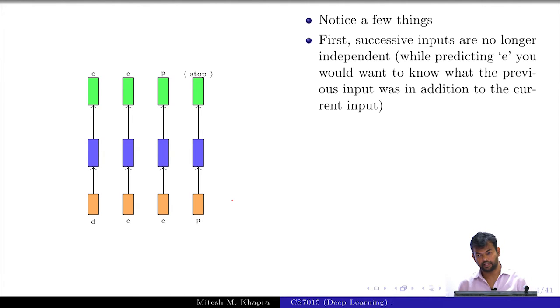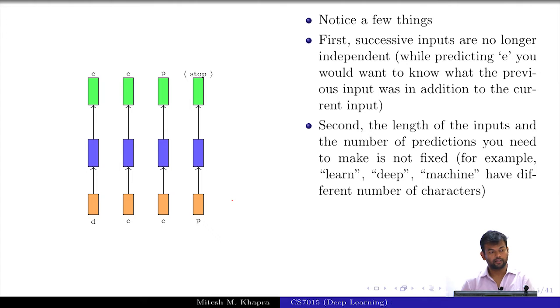First, successive inputs are no longer independent. If I know that the previous input was D and the current input is E, then I know only a few things are possible. In particular, if the previous input was Z and the current input is E, then most likely the next is going to be B. But if you ignore the previous input which was Z, then after E there are many things which can appear. So the inputs are no longer independent of each other. Second, the length of the input is not fixed because words could be of arbitrary sizes - deep is four letters, learn is five letters, machine is seven letters. So the input size is no longer fixed and the inputs are now dependent on each other. This is very different from what we saw in convolutional neural networks and feedforward neural networks.